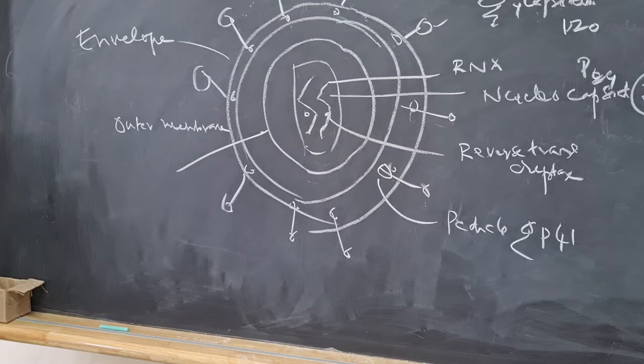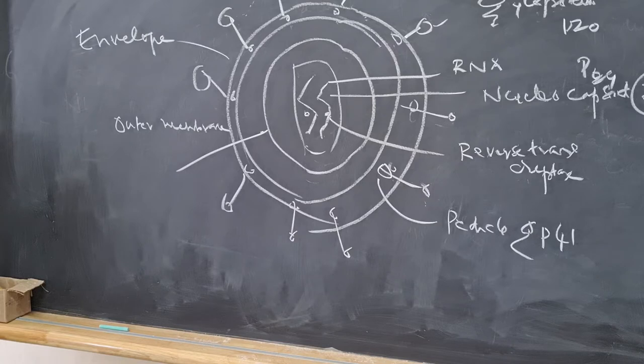This belongs to retrovirus. It is spherical in shape. It has got two identical pieces of RNA and inside it has got reverse transcriptase enzyme. And envelope, it has got two antigens which are made up of glycoprotein 120 and glycoprotein 41. And it has got a nucleocapsid antigen which is made up of P24. Clear? Okay.